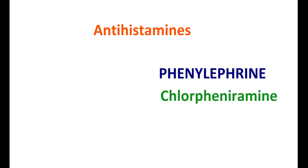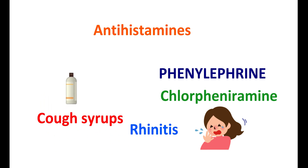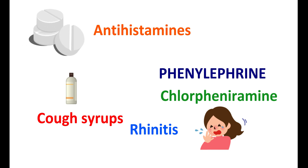Similarly, antihistamines like phenylephrine and chlorphenamine are used to control symptoms of allergy and rhinitis and are widely used in cough syrups. In such preparations, acetaminophen can be included at a low dose such as 325 mg. If these preparations are taken repeatedly along with acetaminophen tablets, it may again lead to development of toxicity.